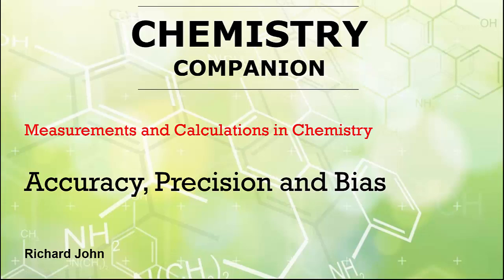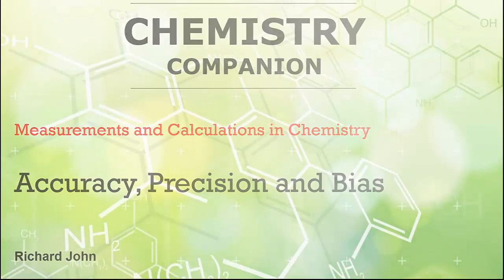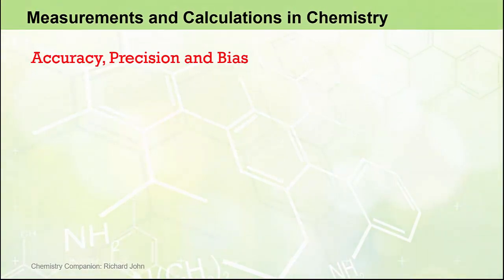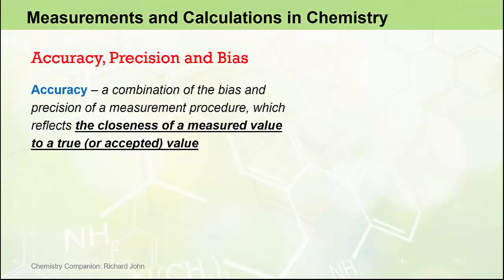In chemistry or science in general, when we make a measurement, that measurement will be subject to limited accuracy and limited precision, and it's also likely to contain a small element of bias. We're going to look at these three terms in some detail to try and get an understanding of the limitations we face when making measurements, and we'll start with accuracy.